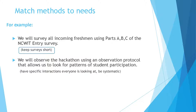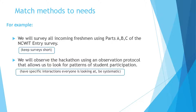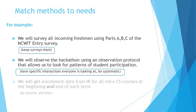Another method statement example: we will observe the hackathon using an observation protocol that allows us to look for patterns of student participation. An important point here is that you want to have specific interactions that everyone is looking at — all your observers — and you want to be systematic. They'll write it down in an observation protocol and look for the same things at the same intervals.